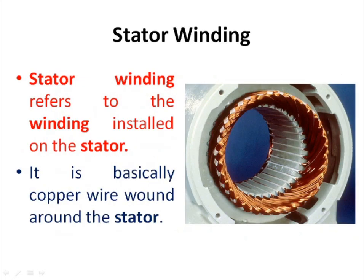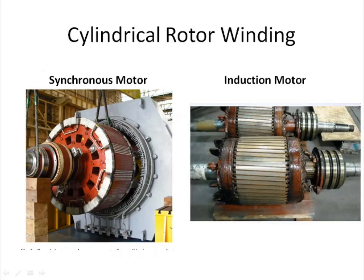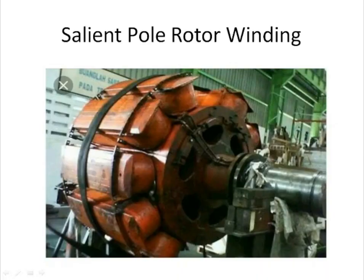Stator winding refers to the winding installed on the stator — it is basically copper wire wound around the stator. The rotor may be cylindrical or salient in nature. This is the diagram of a cylindrical rotor, and the winding placed on this rotor is called cylindrical rotor winding. This is the diagram of a salient pole rotor winding.